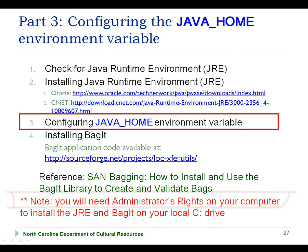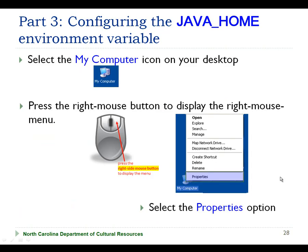Let's first take a look at how you would configure the JAVA_HOME environment variable before we configure it on my computer. To get started, you're going to select the My Computer icon on your desktop, and then press the right mouse button to display the right mouse menu. On the right mouse menu, you're going to select the Properties option.